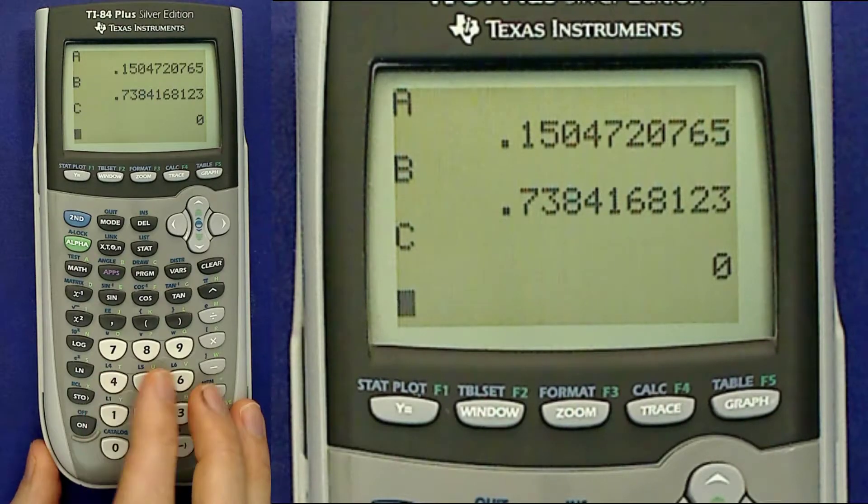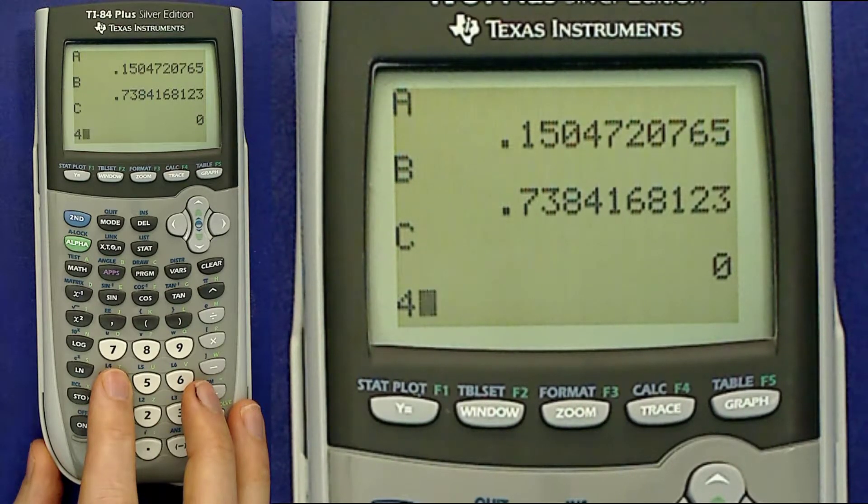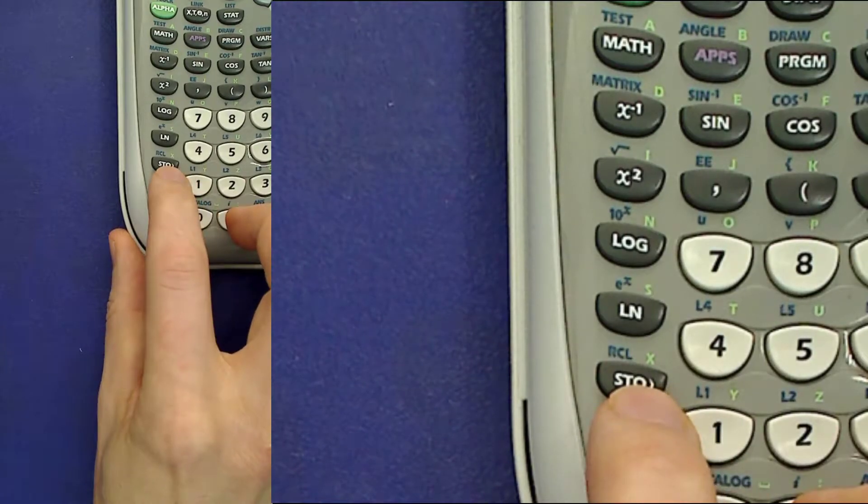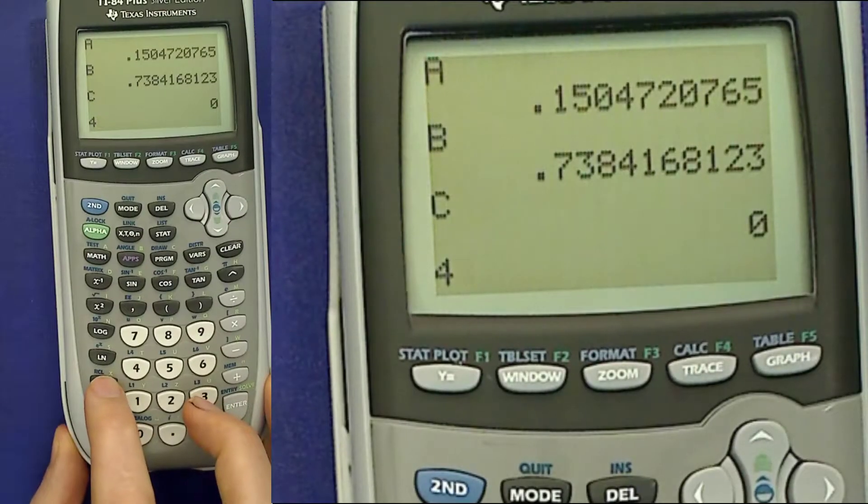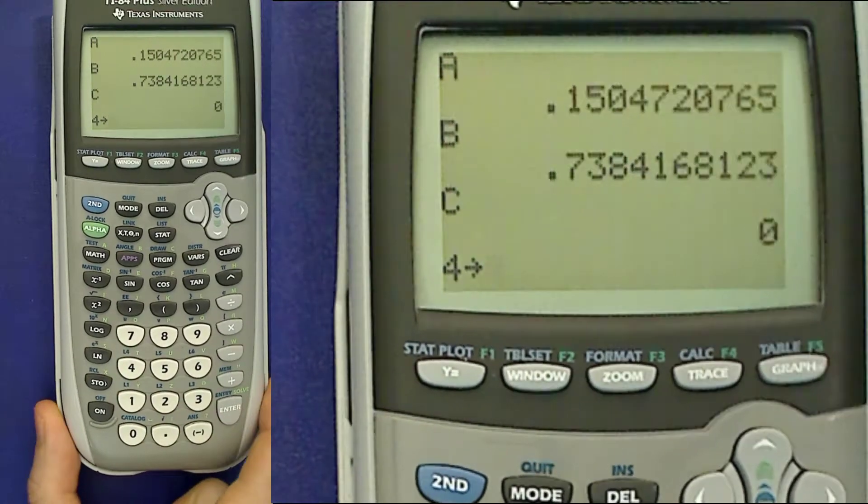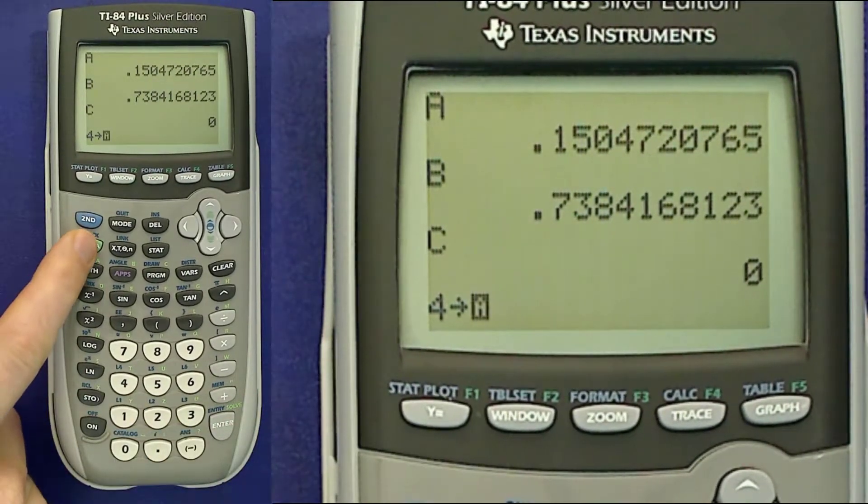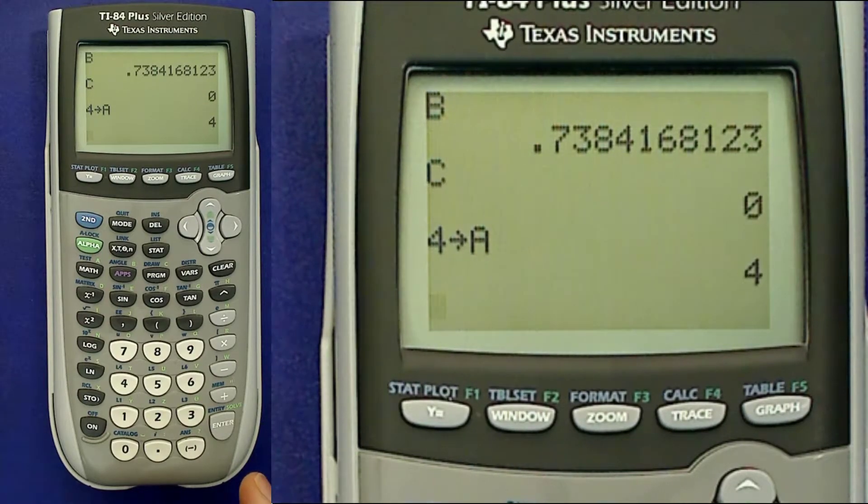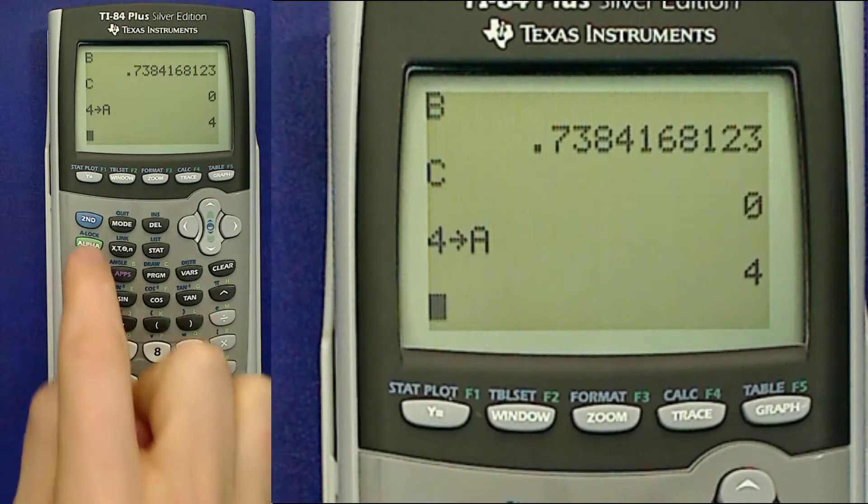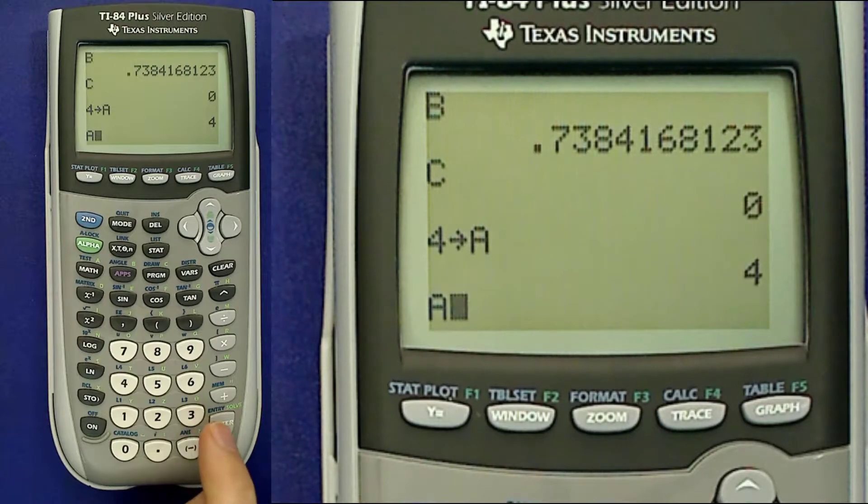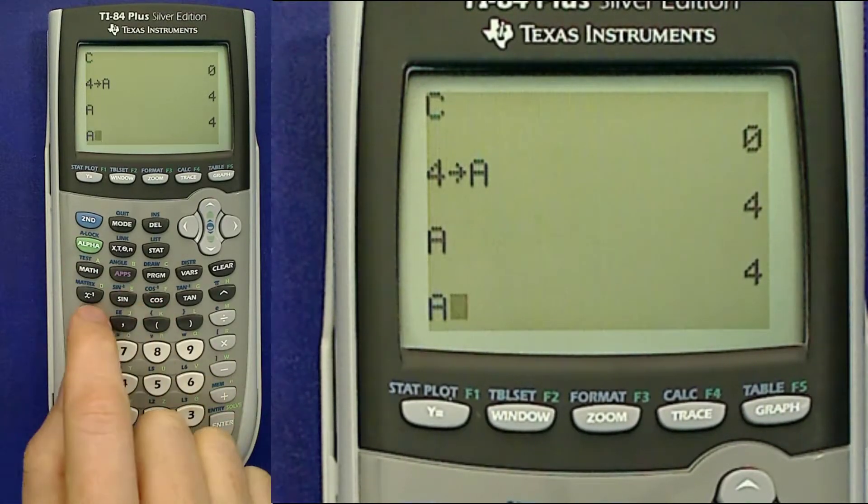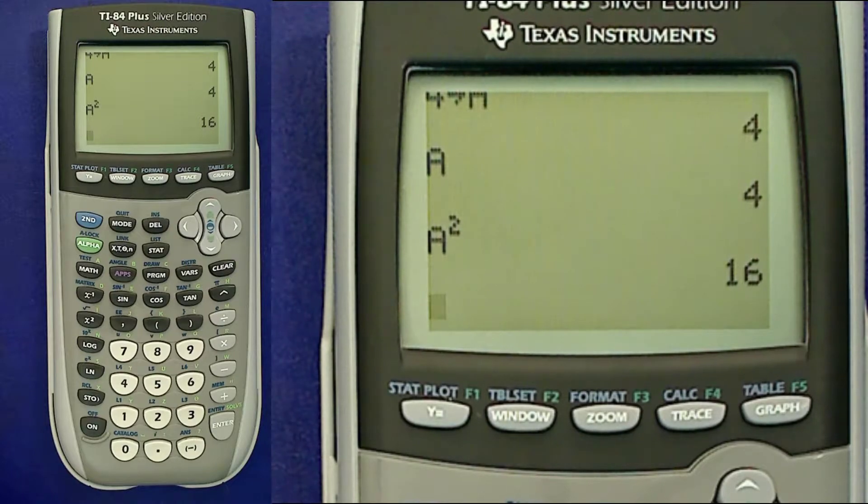So for example, suppose that I wanted to store the number four in a. I could type the four and then hit the store button, which is right here next to the on key and the one key. When I hit the store button it generates that arrow. Now I hit the alphabet button and the key with the a over it, and that has now stored the number four in the calculator's memory under the letter a. And if I were to, for example, type alphabet and that button again to get the a, the calculator recalls the four. I can also use it in calculations, so a squared gives 16 and so on.